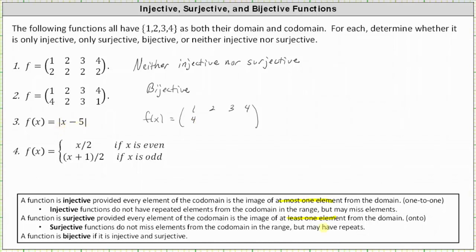When x equals one, we have the absolute value of negative four, which is four. When x equals two, we have the absolute value of negative three, which is three. When x equals three, we have the absolute value of negative two, which is two. When x equals four, we have the absolute value of negative one, which is one. Notice how each element in the codomain does appear in the range, so the function is surjective. None of the elements from the codomain are repeated in the range, so the function is also injective. Every element in the codomain is the image of exactly one element from the domain, and therefore number three is also bijective.